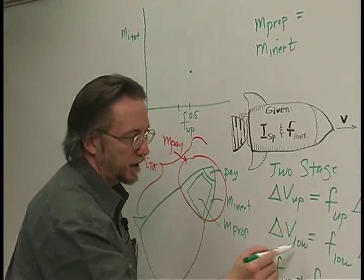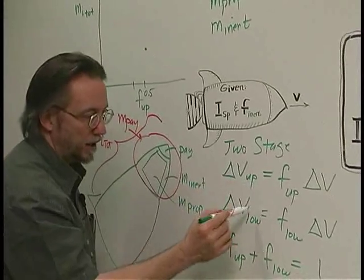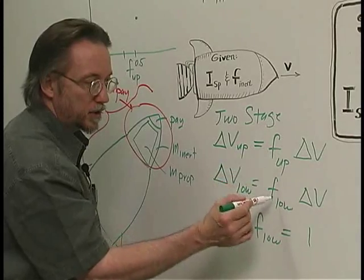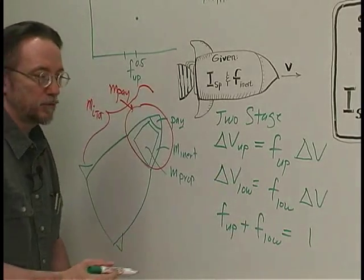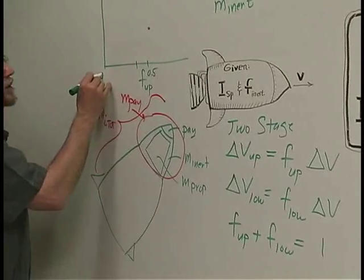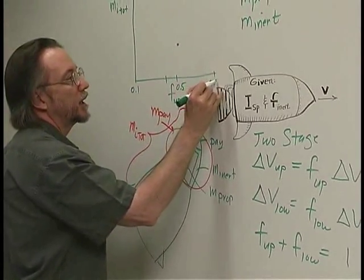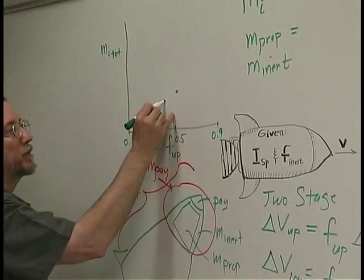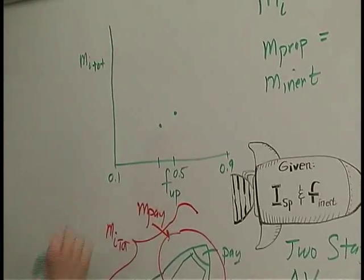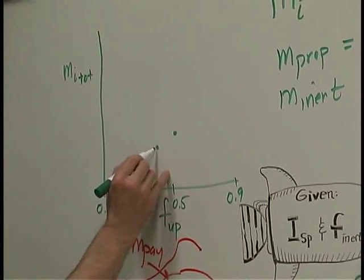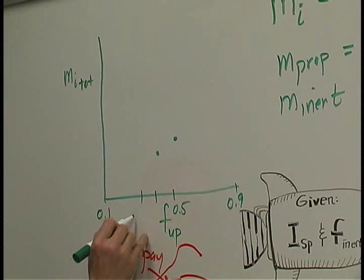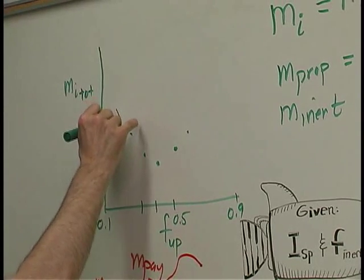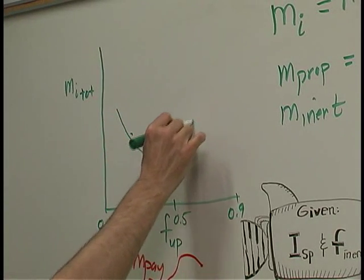And so we can do another calculation where we have split the delta V up into a different proportion for the upper and lower stage. So we can change these two values ranging from, say, about 0.1 to 0.9. If, for example, F up of 0.4 gives a lower value, then we can plot it like this. And so we can do this calculation for a number of points and end up with a curve that looks like this.